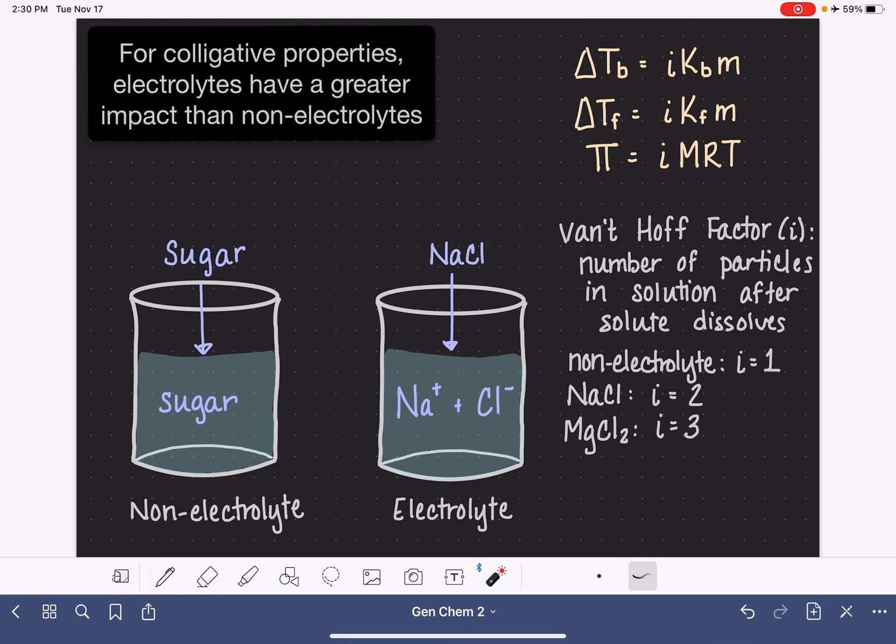Now one thing that I do want to add before finishing the video is that the actual experimental values of i are usually less than what we predict. So we predict that the value of i for sodium chloride is two, but the actual value of i is a little bit less. And same with magnesium chloride, we predict it to be three, but the actual value is a little bit less. Typically when you're solving problems using the van't Hoff factor, you'll just use the predicted value of i, unless you're being told otherwise. If you need the true value of i for any one of these electrolytes, then you can easily look it up on the internet or in a table in your textbook.